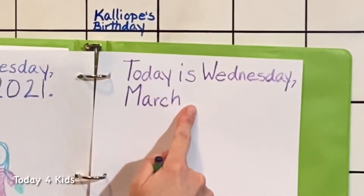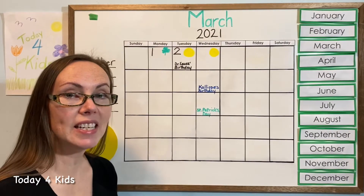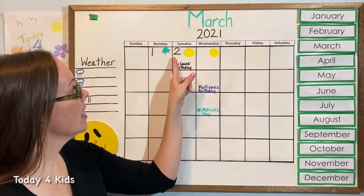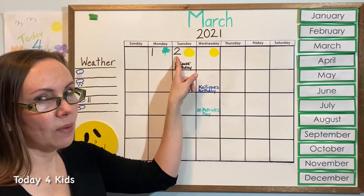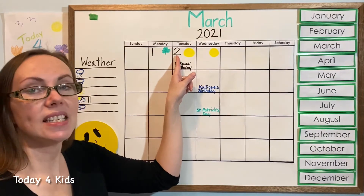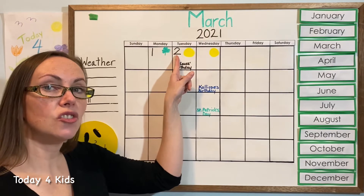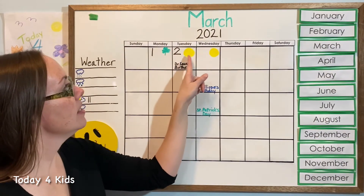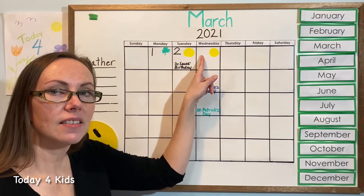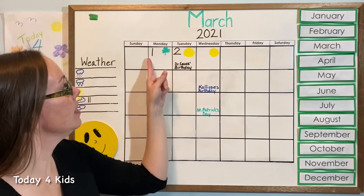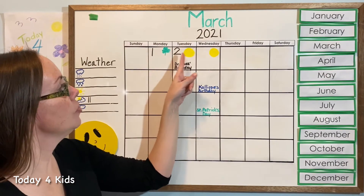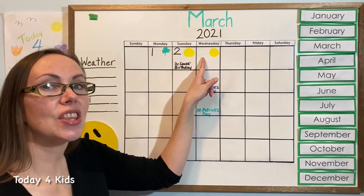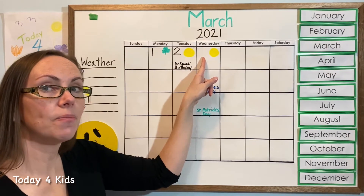And then we need to put in the number. Do you know what our number will be today? Let's figure it out together. So we'll go back to our square with the circle in it. And yesterday was two, and we say the second. When we put it in the calendar, we say second. Even though when we count we say two, we say second when we put it in the calendar. Can you say second? Good job. So what comes after two when we're counting? Let's start at the beginning and see if our guess is correct. One, two, three. Did you guess three? Three. And we say third when we put it in the calendar. Can you say third? Good job.